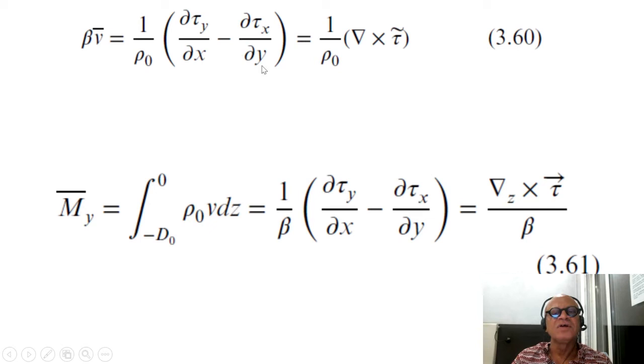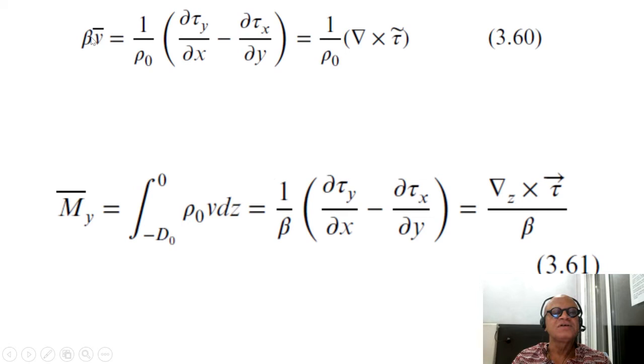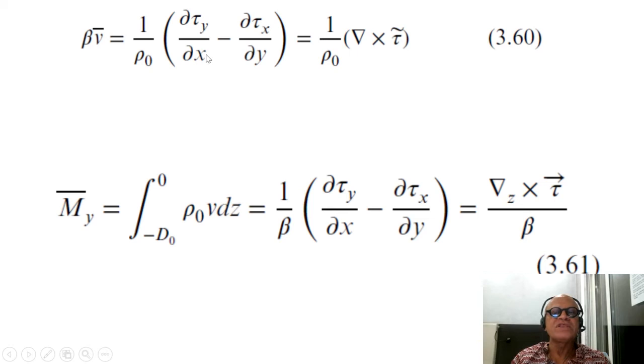So beta v_bar, then 1 over rho_0 delta x minus delta y, del x minus del x del y. So essentially we're taking this and integrating. When you integrate, tau_y and tau_x go to zero at some depth D_0, so you just get tau_x and tau_y, and that's what we're doing here. So beta v_bar in this case gets simplified because tau_x and tau_y disappear at some depth.